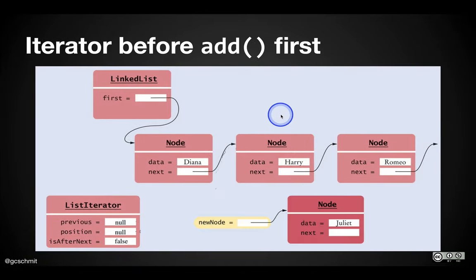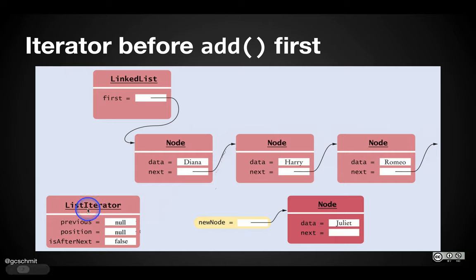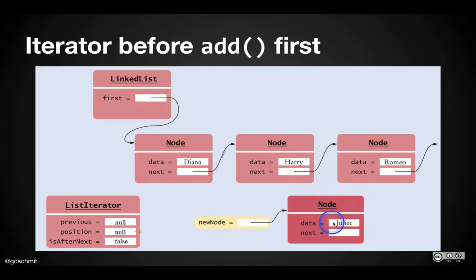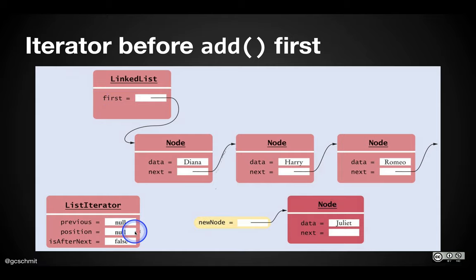First case: let's say our iterator is at the beginning of a list. We know that because position is null. We have various nodes in our linked list. With the iterator at the very beginning of the list, we call add. That's perfectly allowed. That's going to add the new node at the beginning of the list. Our new node is going to have data — the element is going to be Juliet — and we need to insert it at the beginning of this linked list. There are several things that need to change about the linked list object, the new node, and our iterator to reflect that.